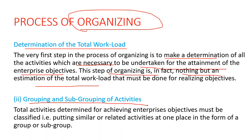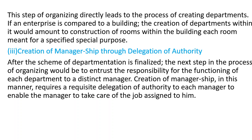Next is grouping and subgrouping of activities. The total activities determined for achieving enterprise objectives must be classified — that is, putting similar or related activities together in the form of a group or subgroup. This step directly leads to the process of creating departments. If an enterprise is compared to a building, then the creation of departments within it amounts to the construction of rooms within that building, each room meant for a specified special purpose.